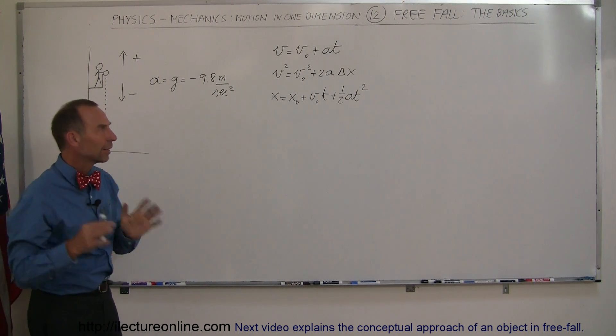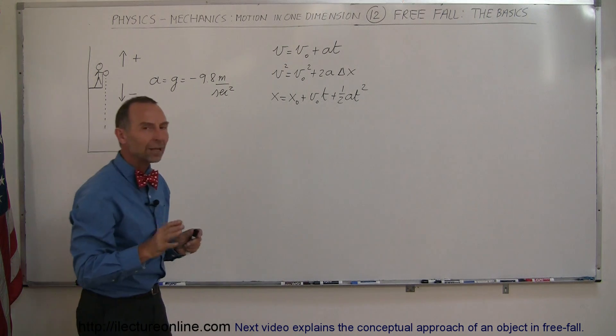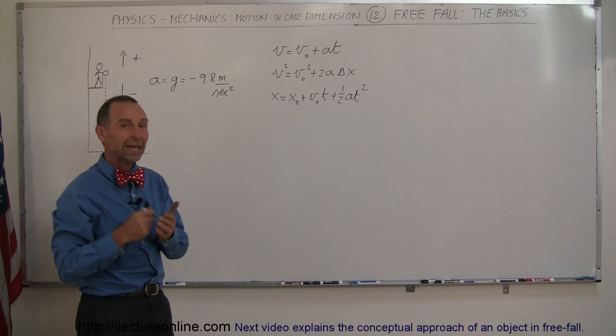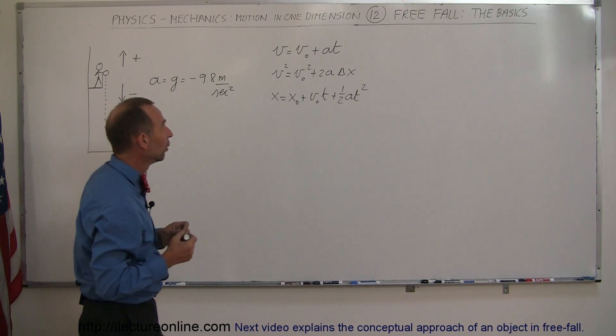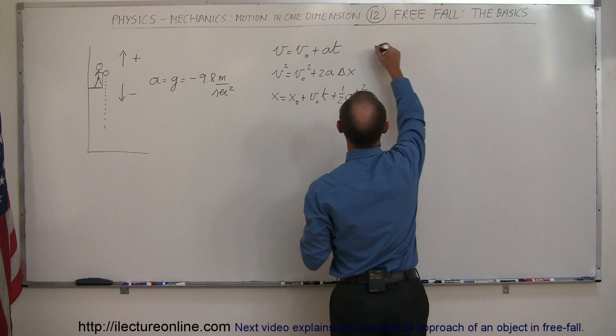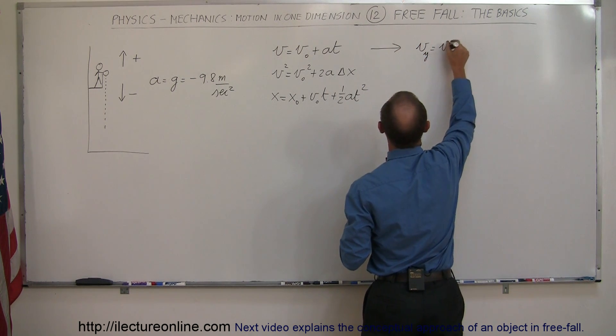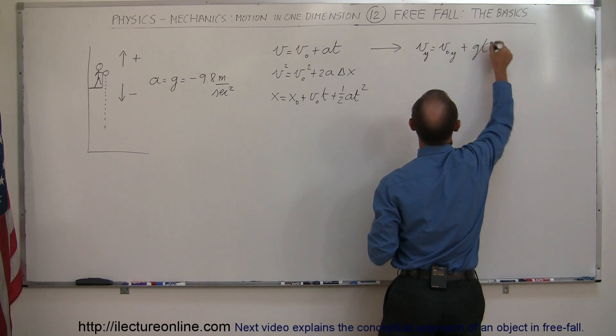So we take the equations of kinematics that we've been using for one-dimensional motion and we'll write them slightly differently to account for the vertical motion. Also, acceleration here is a known quantity, always equal to G. So the first equation then becomes V in the y direction equals V initial in the y direction plus G times T.